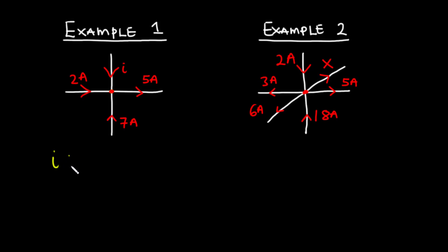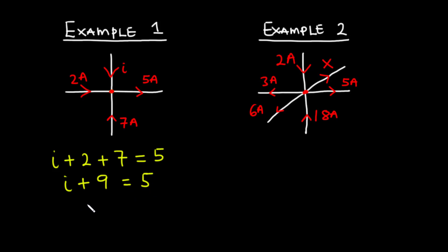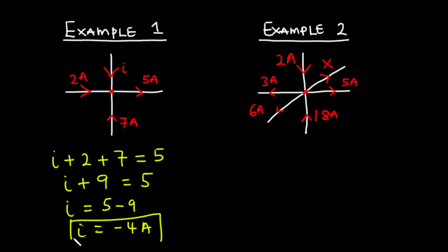It's going to be I plus 2 plus 7 equals 5, which is leaving the junction. Now to find the value of I, let's simplify. We have I plus 9 equals 5. To find the value of I, we transpose 9 to the right hand side, so it's going to be I equals 5 minus 9, and then I is equal to negative 4 amperes. The negative sign simply means that I is leaving the junction instead of entering it.